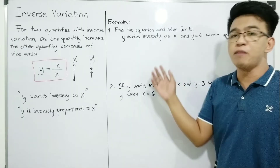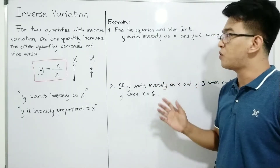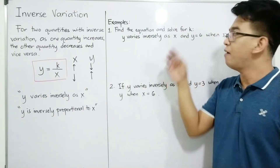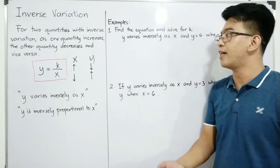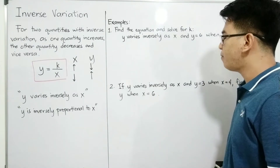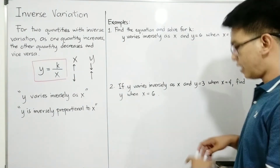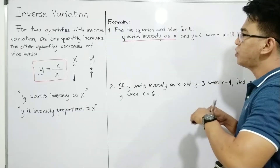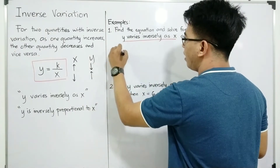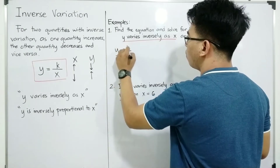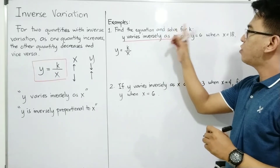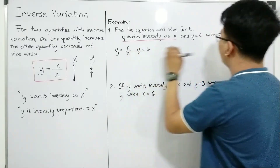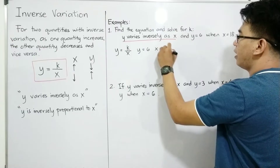Now, we have here two different problems to solve in inverse variation. Number one: find the equation and solve for k. We are given y varies inversely as x. First thing you need to do is to create an equation: y is equal to k over x. We need to solve for k, and y is equal to 6 when x is equal to 18.